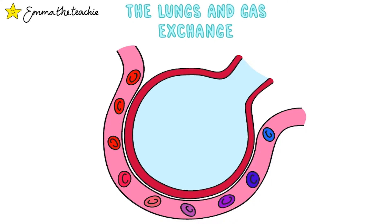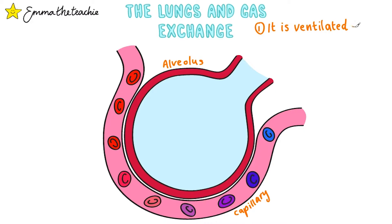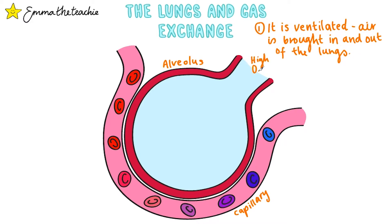Now let's look at the adaptations for gas exchange. Here is one alveolus. This is where gas exchange takes place and you can see that it is surrounded by a capillary. Air is actively brought in and out of the lungs, which helps maintain a steep concentration gradient as fresh, oxygen-rich air is brought into the lungs with each breath. Gas exchange then takes place and the CO2 that entered the alveolus from the blood will then leave with each exhaled breath.